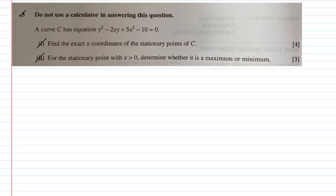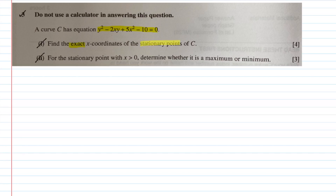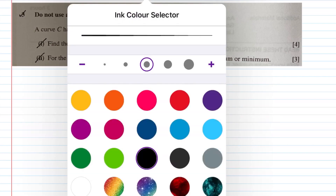Question 3 is actually a very simple question. We're looking at differentiation, which is a topic a lot of students enjoy. This question doesn't even require a calculator because it's so straightforward. The curve C has equation y² − 2xy + 5x² − 10 = 0. The first part asks you to find the exact x-coordinates of the stationary points of C.